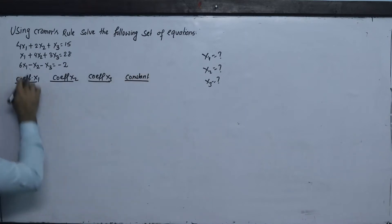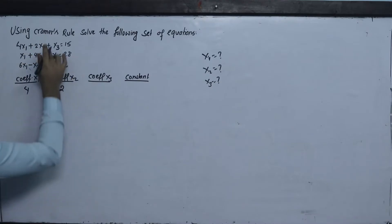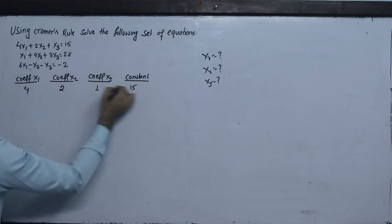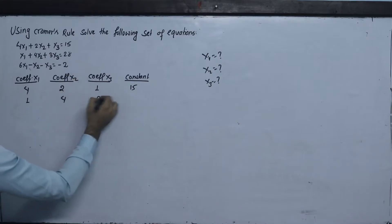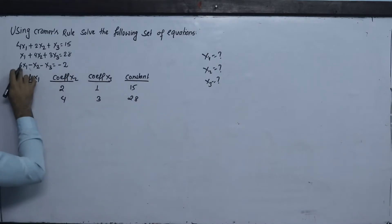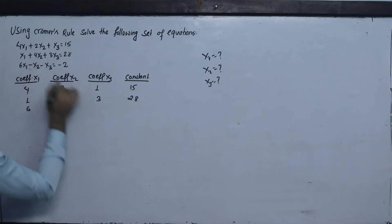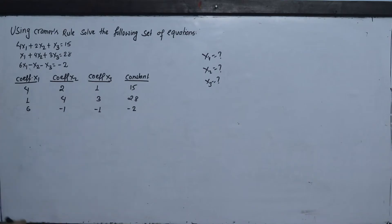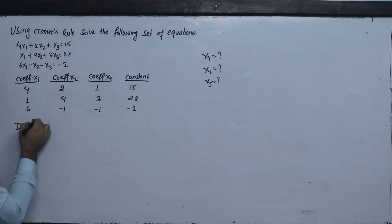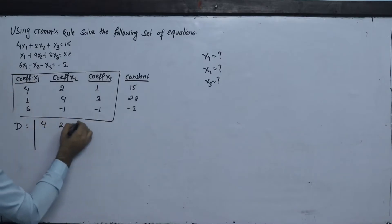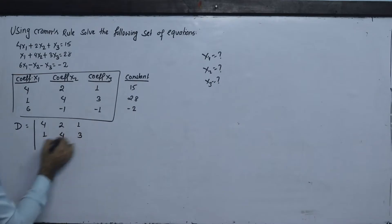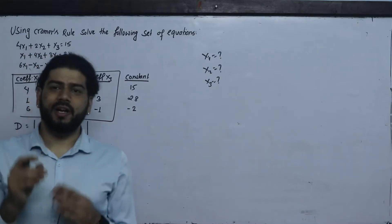First, let's make a determinant D. This is the value of the coefficients. D is: row one is 4, 2, 1; row two is 1, 4, 3; row three is 6, minus 1, minus 1. Now let's expand and determine the value of this coefficient determinant.